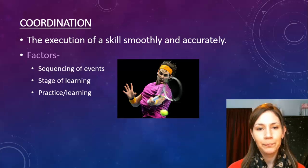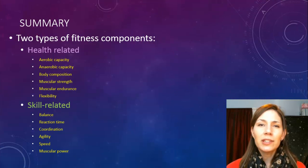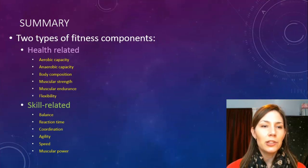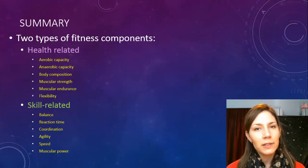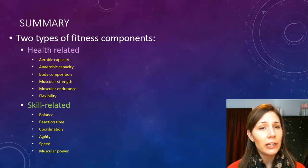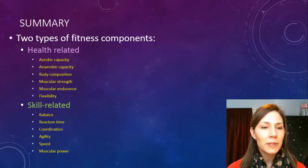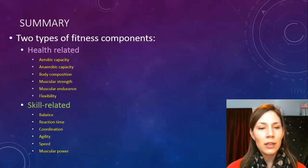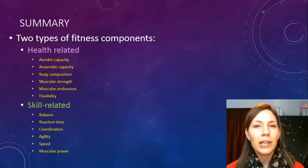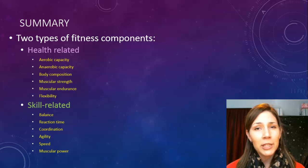So just to summarize: the health-related fitness components are aerobic and anaerobic capacity, body composition, muscular strength and endurance, and flexibility. The skill-related components are balance, reaction time, coordination, agility, speed, and muscular power. Thanks for watching, and hope to see you next time.